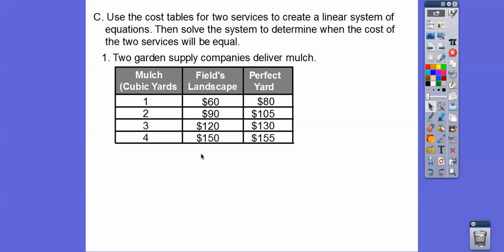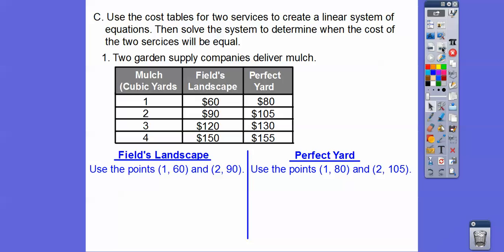And then there's some more ordered pairs. 1, 80, 2, 105, 3, 130, and 4, 155. We're going to use those ordered pairs to set up linear equations. So on Fields, we'll do 1, 60 and 2, 90. On Perfect Yards, we'll do 1, 80 and 2, 105.